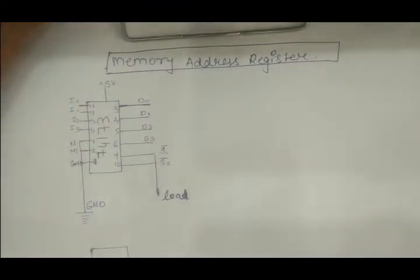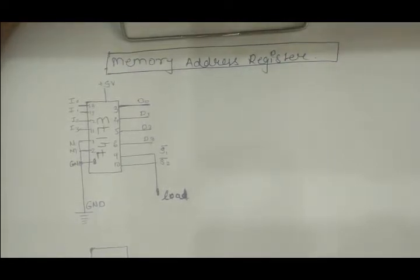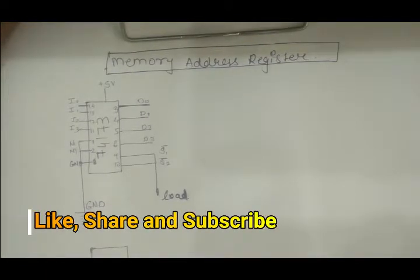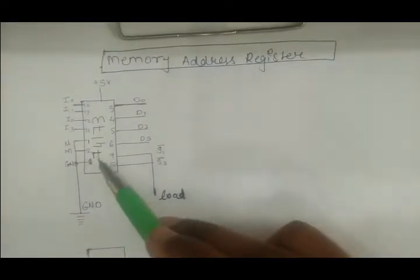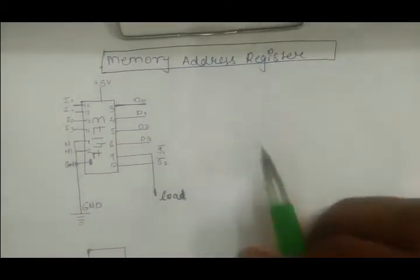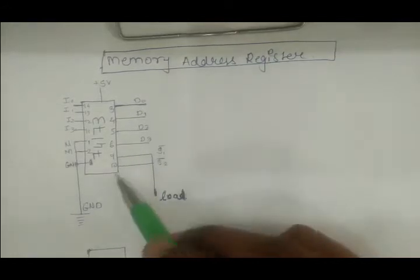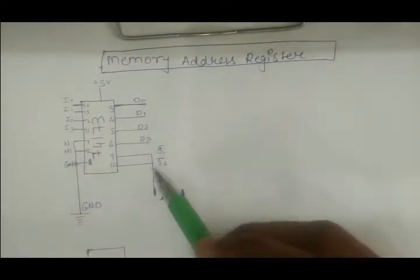We need to focus on how we can design the memory address register for our 8-bit computer. The memory address register stores an address value inside it, so we need a digital electronics component that stores values. That component is a flip-flop, and specifically we will use the 74173 IC, which is a 4-bit register. If you want to know more about it, I have discussed it in previous videos.